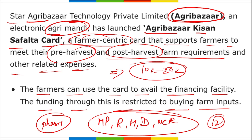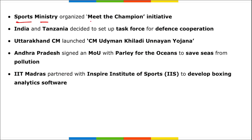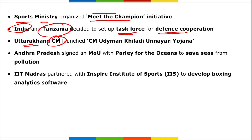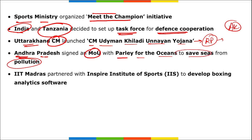The Sports Ministry launched the 'Meet the Champion' initiative. India and Tanzania decided to set up a task force for defense cooperation. Uttarakhand's Chief Minister launched the 'CM Uddyaman Khiladi Unnayan Yojana' to create better sports opportunities and awareness for Uttarakhand's youth — Rishabh Pant and Akshay Kumar were appointed as brand ambassadors. Andhra Pradesh signed an MOU with Parley for the Oceans to save seas from pollution. IIT Madras partnered with Inspire Institute of Sports to develop boxing analytics software.